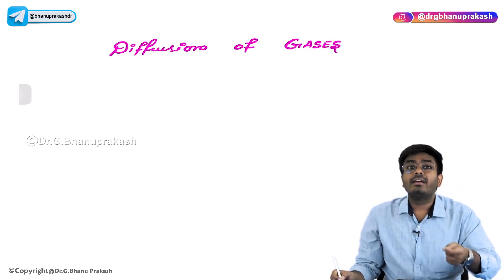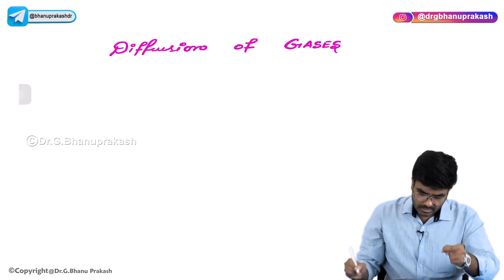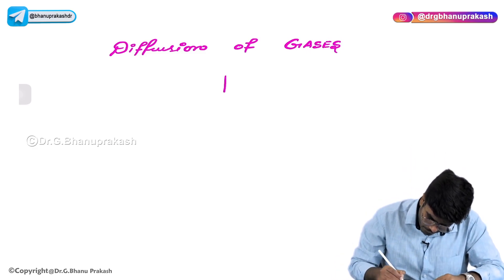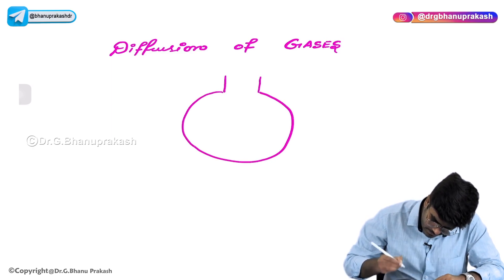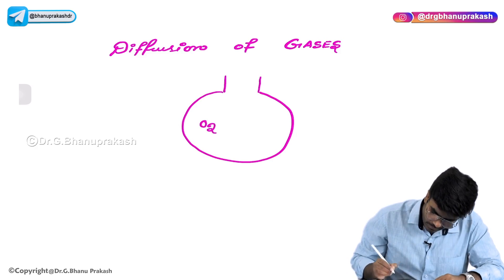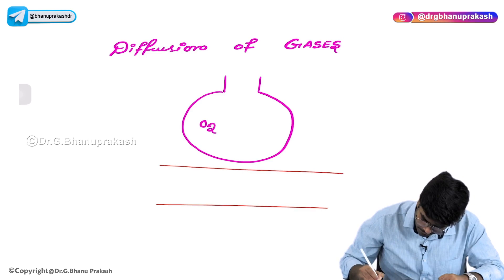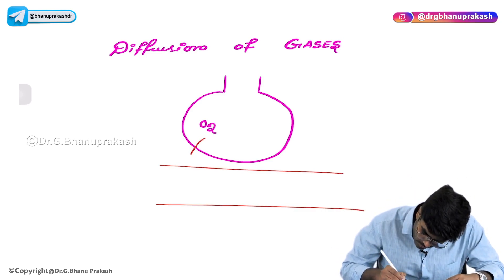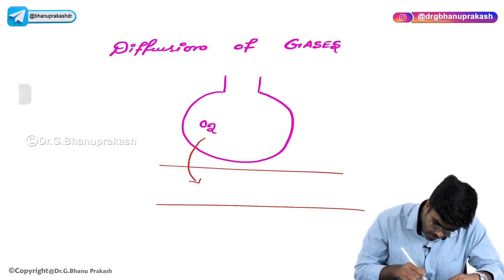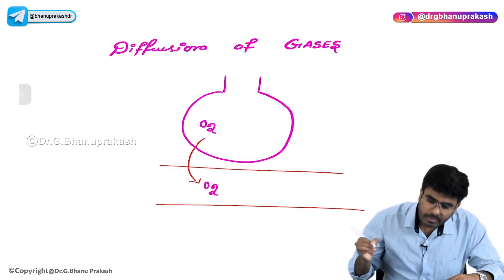Diffusion of gases occurs at the level of alveoli. We all know that in the alveolus there is oxygen. This oxygen has to go into the blood vessels for the purpose of oxygenation. So, oxygen has to diffuse from the alveolus into the blood vessel.